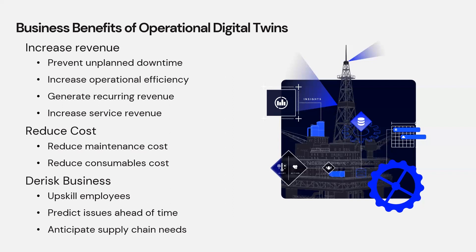Operational digital twins can also reduce your cost. For instance, by predicting when you need maintenance, you can group your maintenance tasks together and therefore reduce maintenance cost quite significantly. You can also understand when you need to replace consumables, and by doing so, optimize when you replace them and therefore save cost.